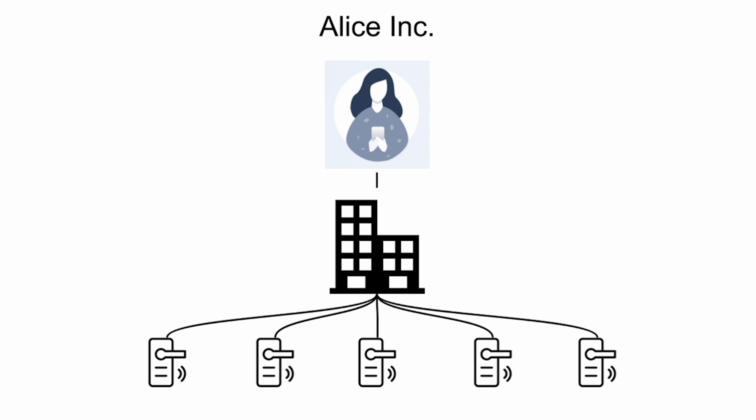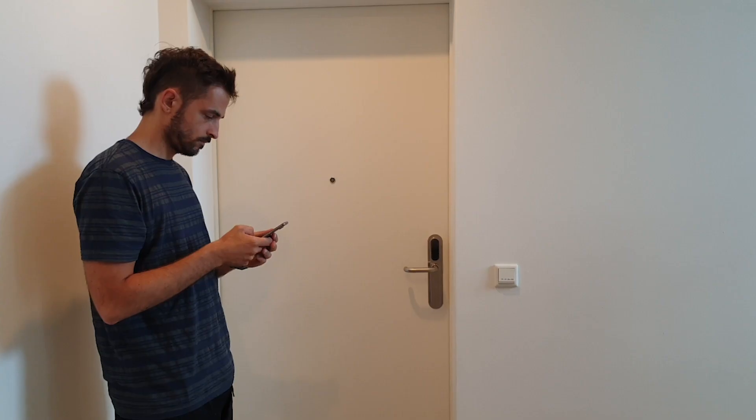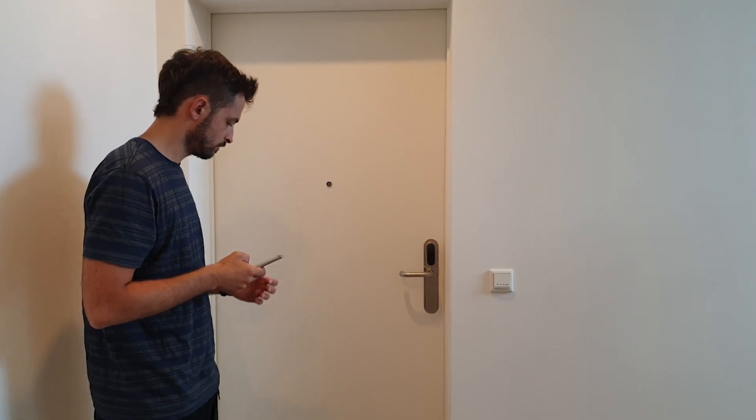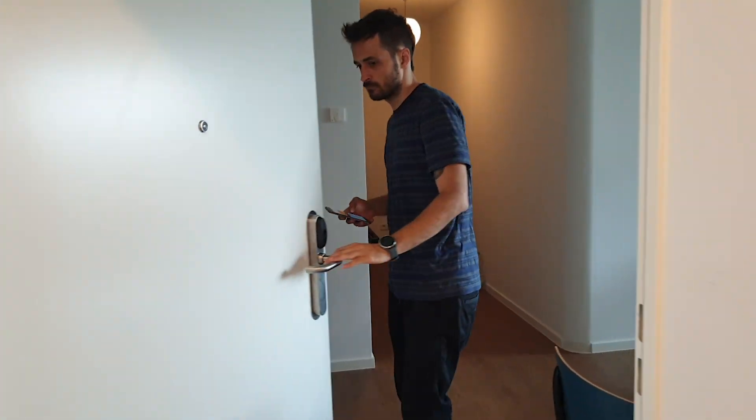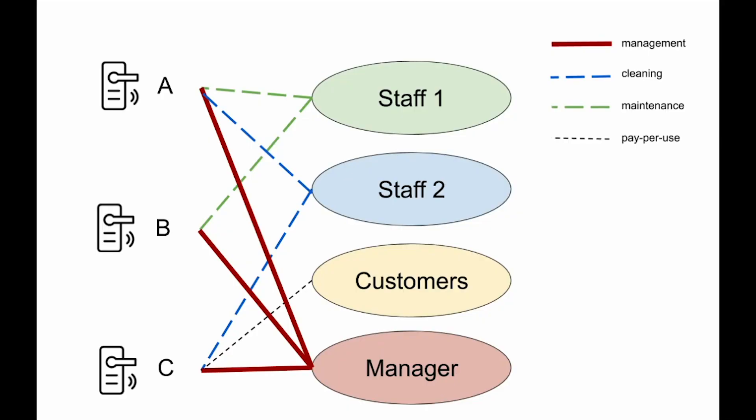Imagine that Alice owns a company. She runs it in a building where every door has a smart lock. Every smart lock is governed by a small computer connected to electrical relays, which control the circuits of the locks. Alice wants to delegate access for three rooms: A, B and C. Staff 1 has access to rooms A and B. Staff 2 has access to rooms A and C. Customers pay for access to room C. Manager has access to all rooms.